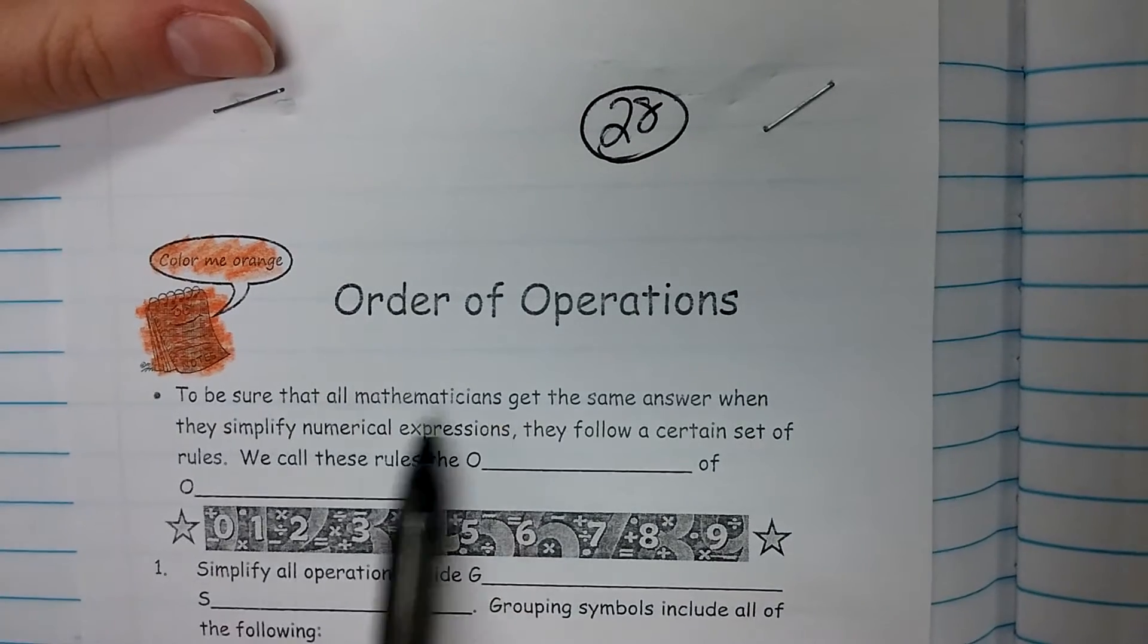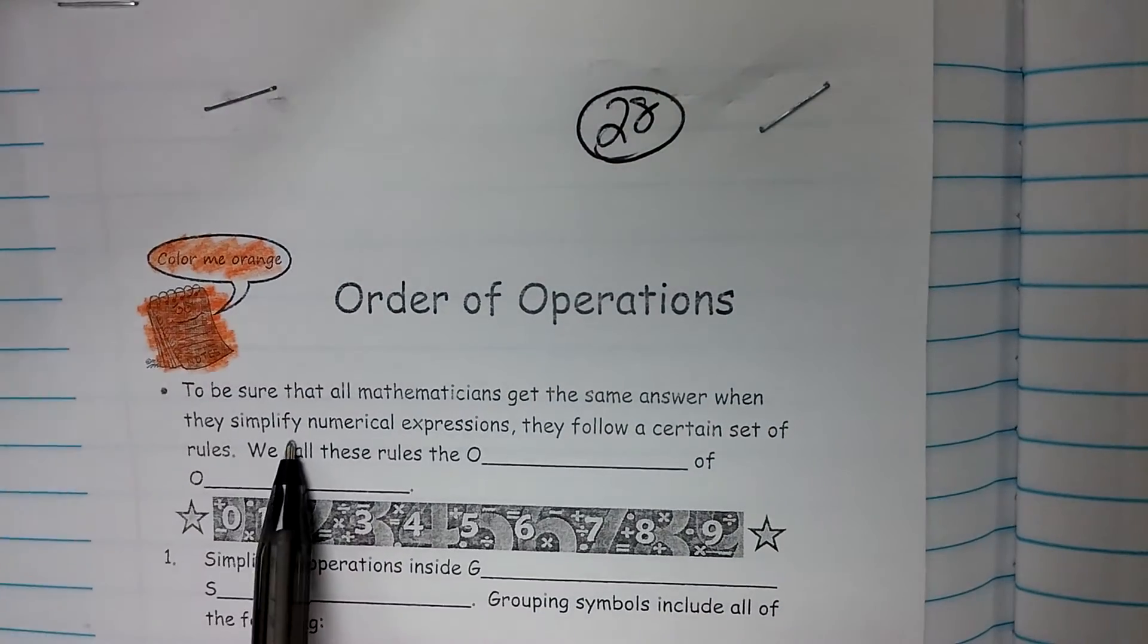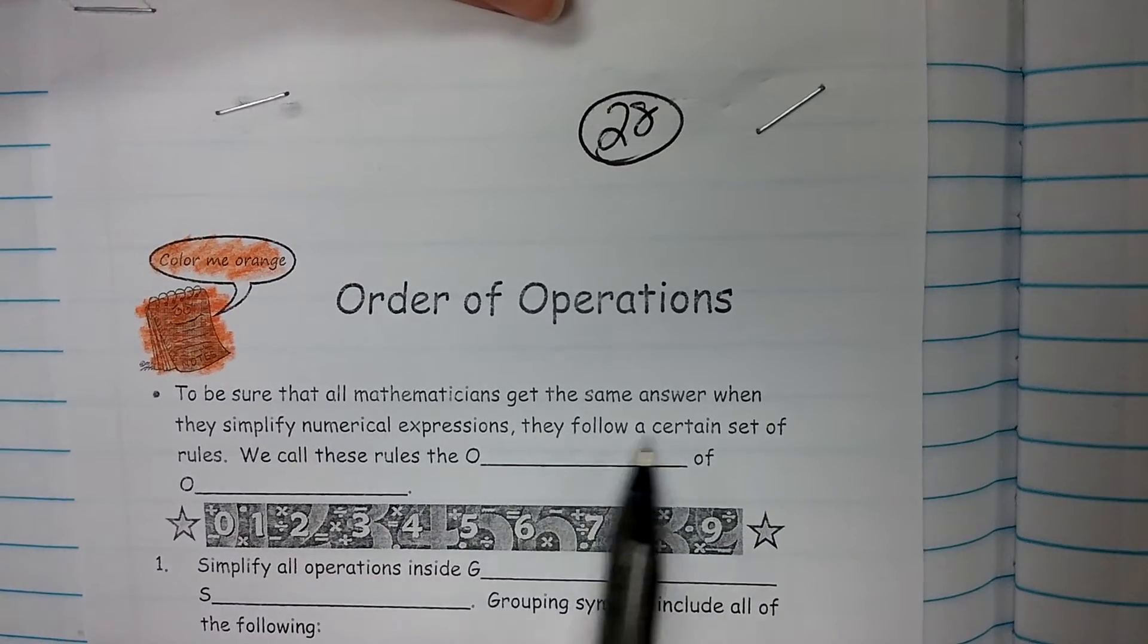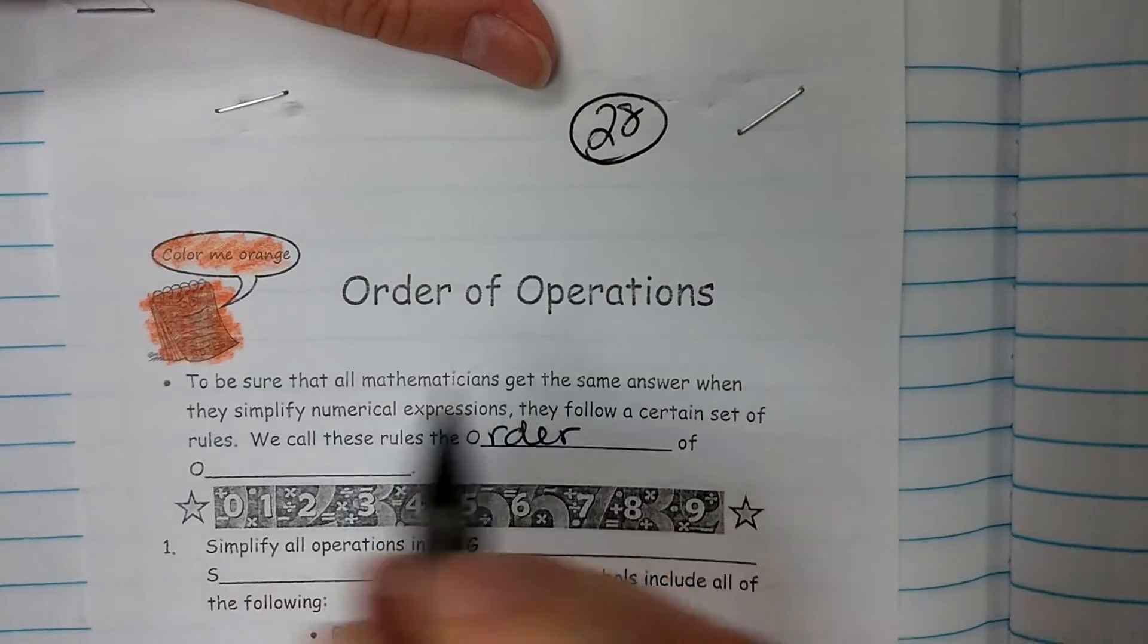To be sure that all mathematicians get the same answer when they simplify numerical expressions, they follow a certain set of rules. We call these rules the order of operations.